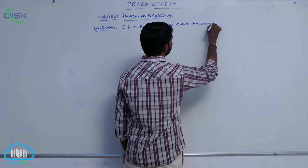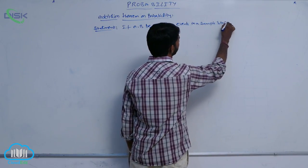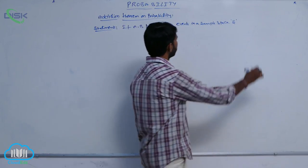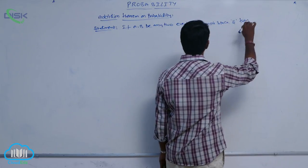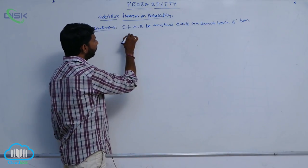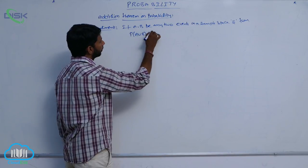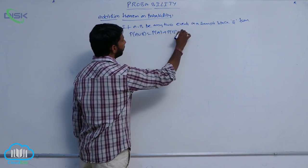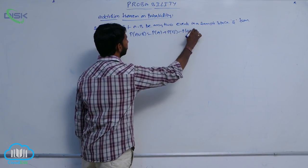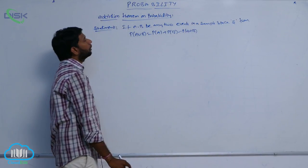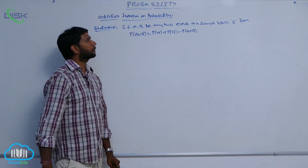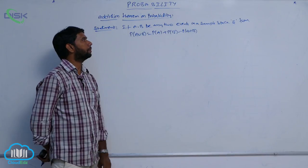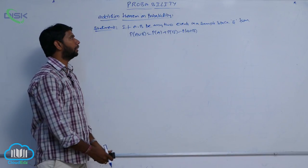if A, B are any two events in a sample space, then P of A union B is equal to P of A plus P of B minus P of A intersection B.